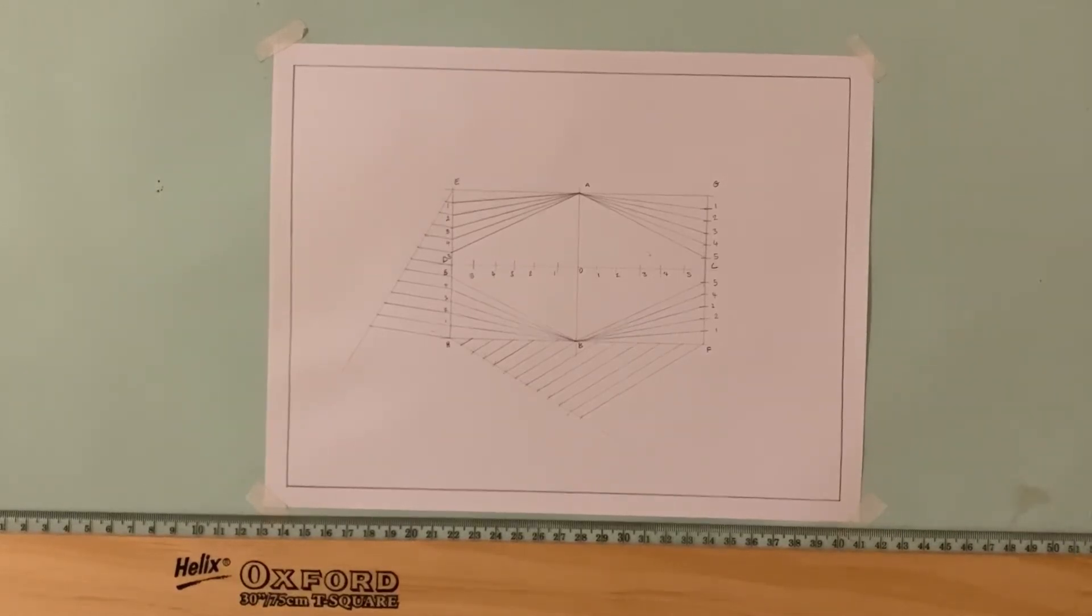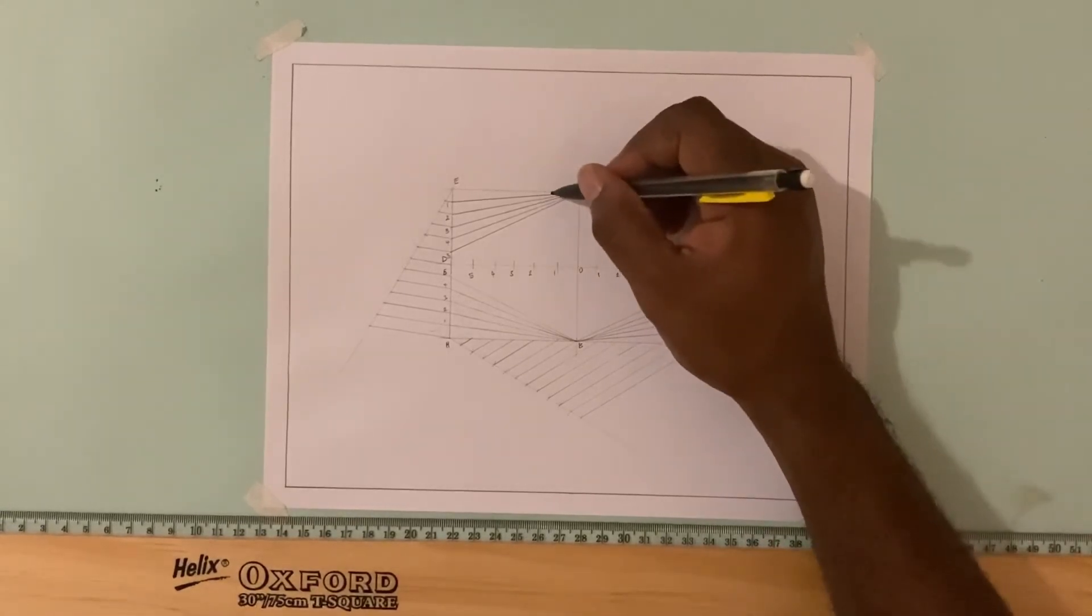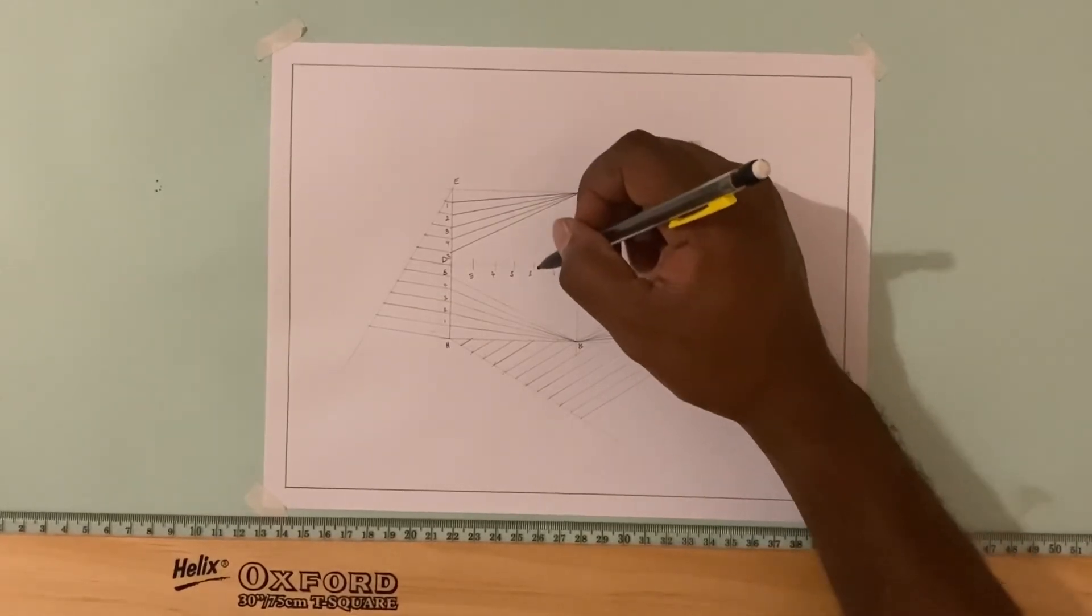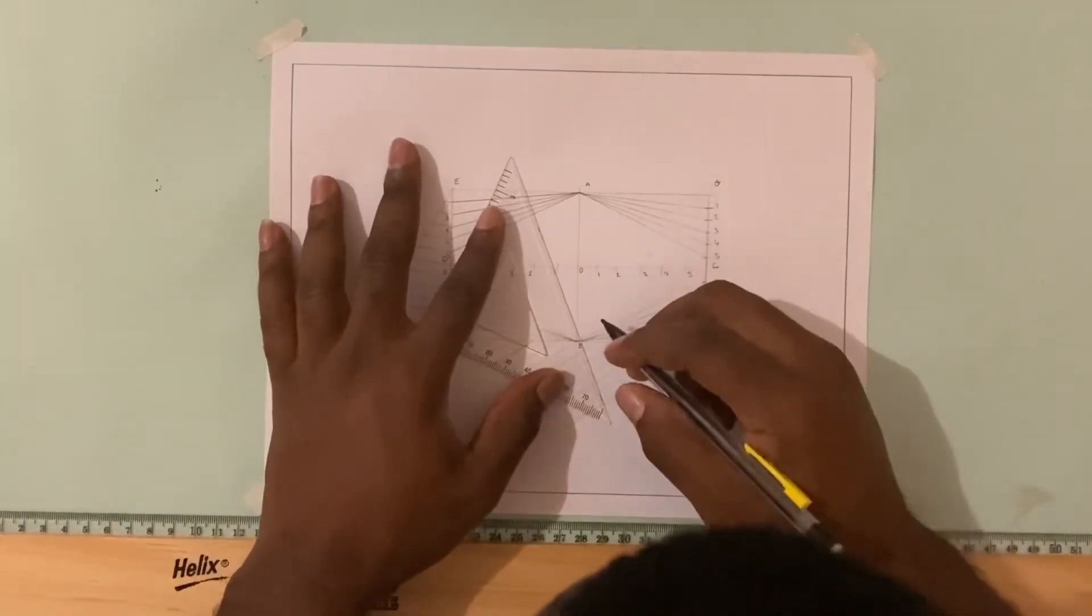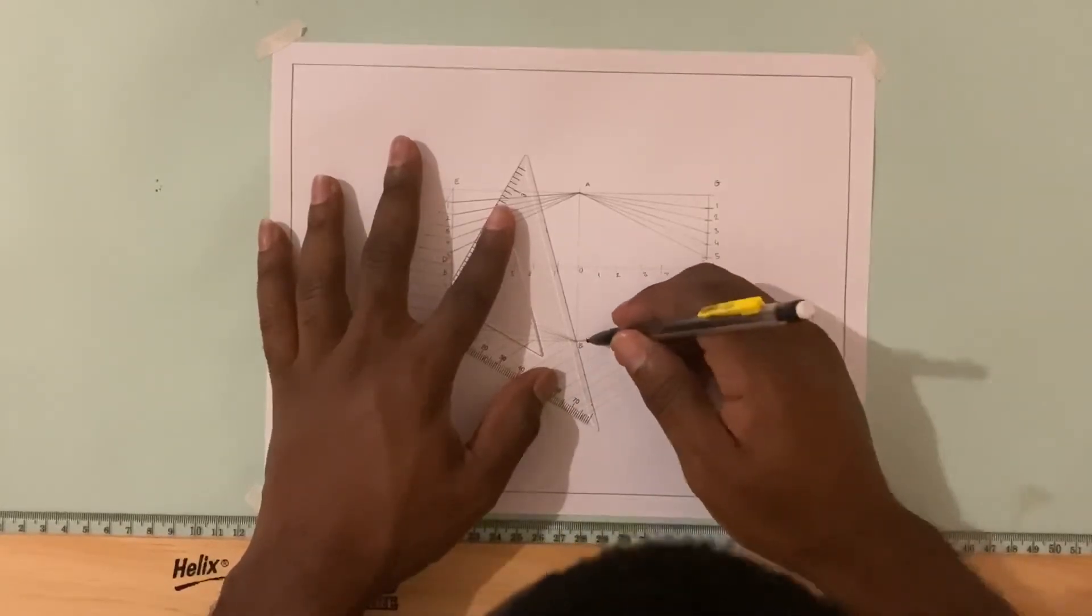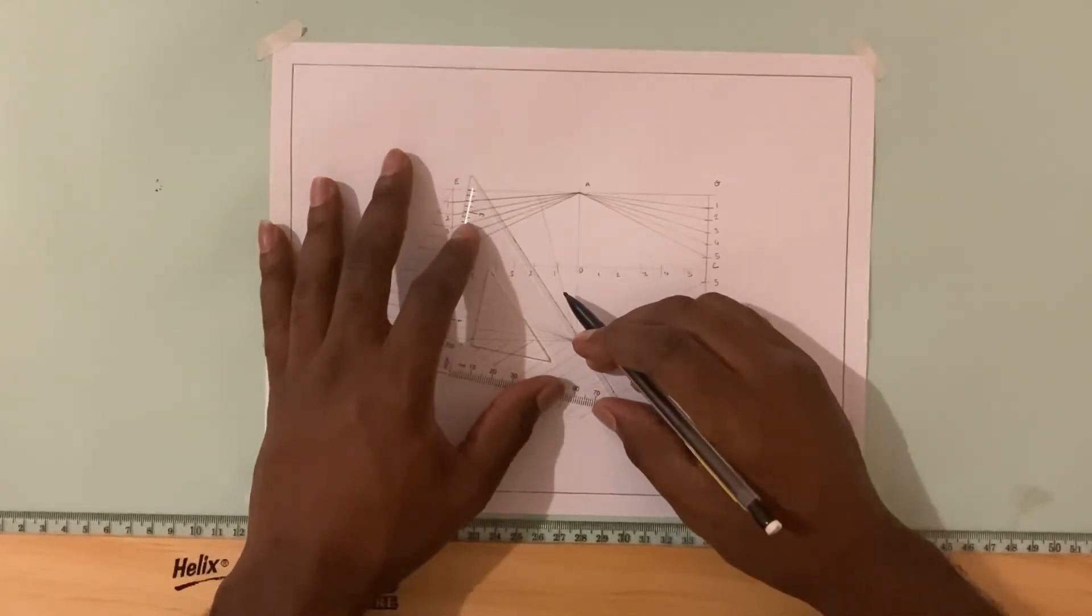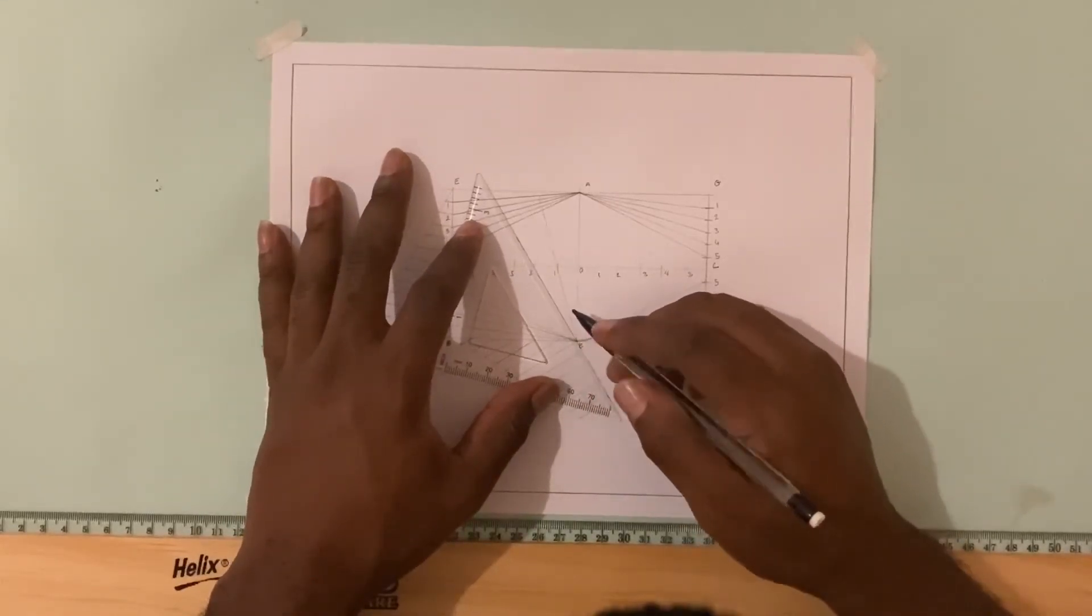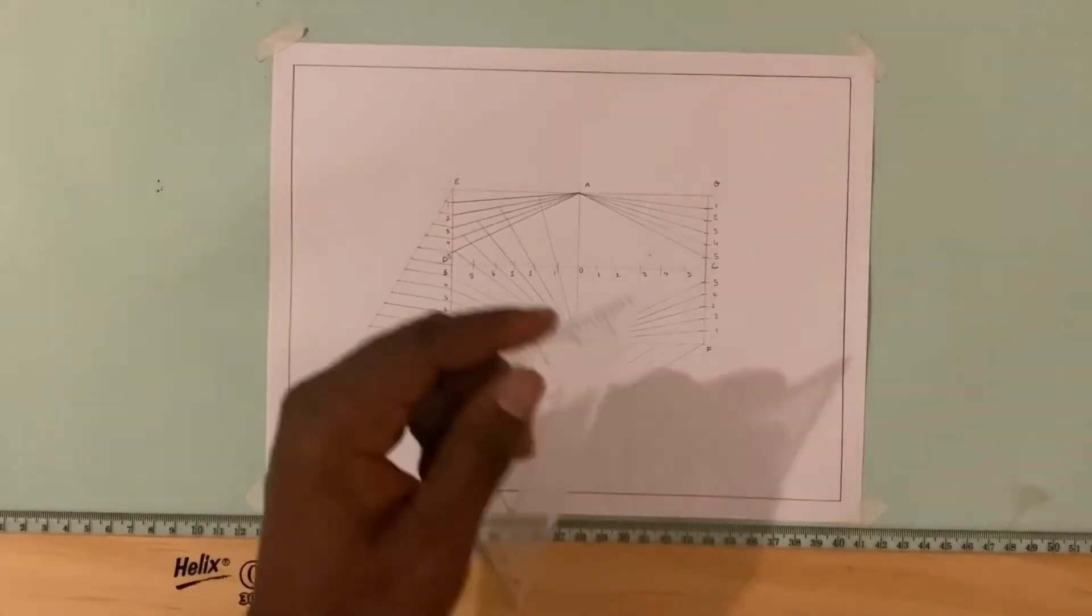Great. Now for our next step, what we want to do is from point B, we're going to draw a line running through point 1 and stops on the line from A1. We're going to do the same from point B through the point 2 that stops on line A2, and we're going to do that right up to point 5. Now we're going to do the same over on the other side.